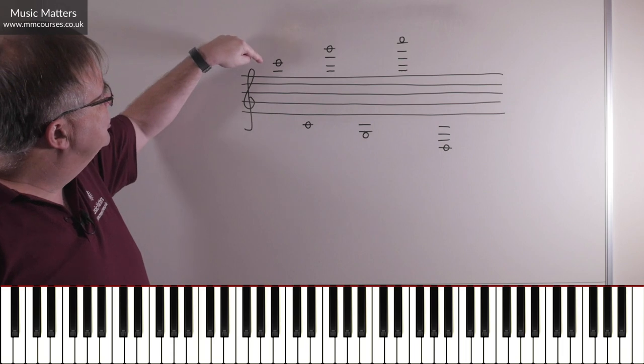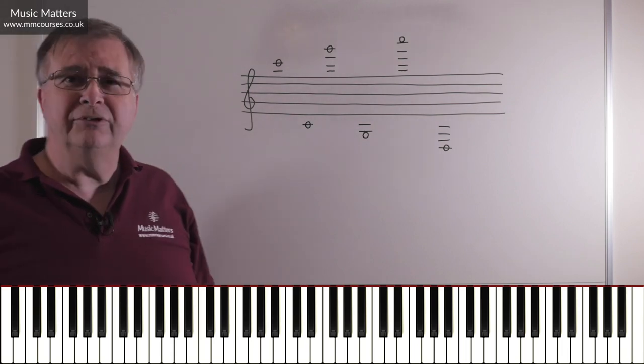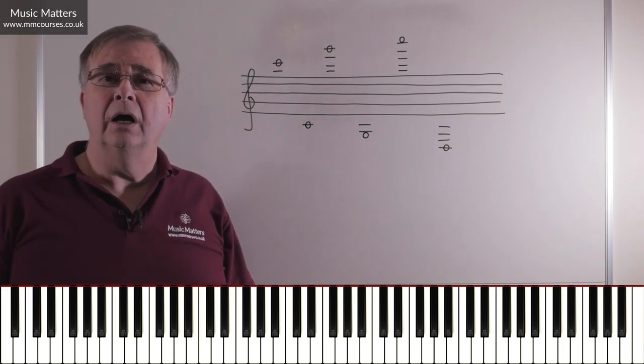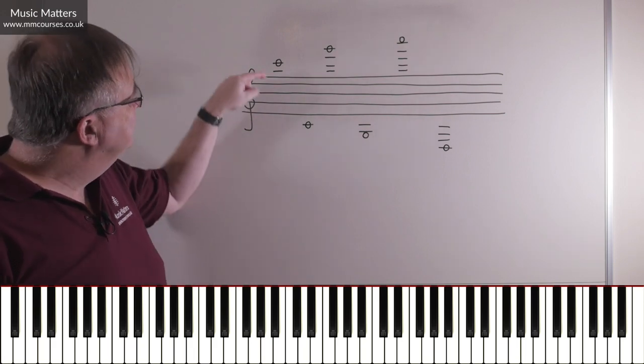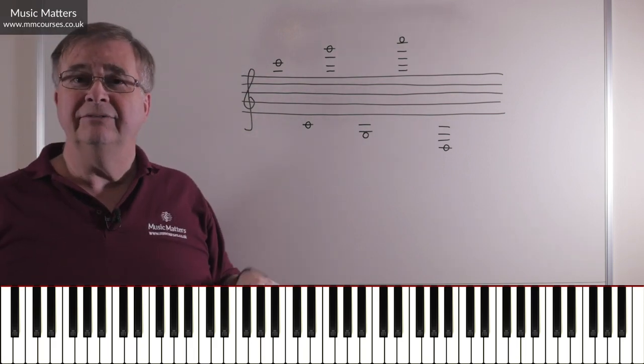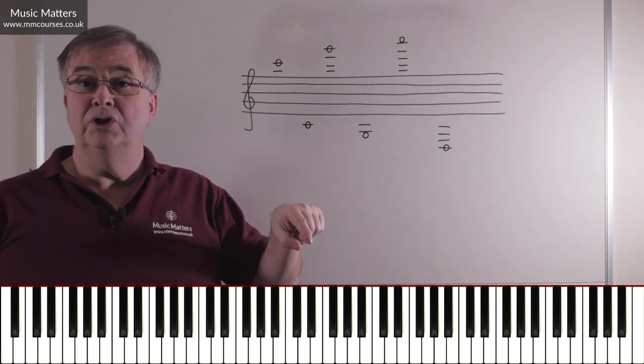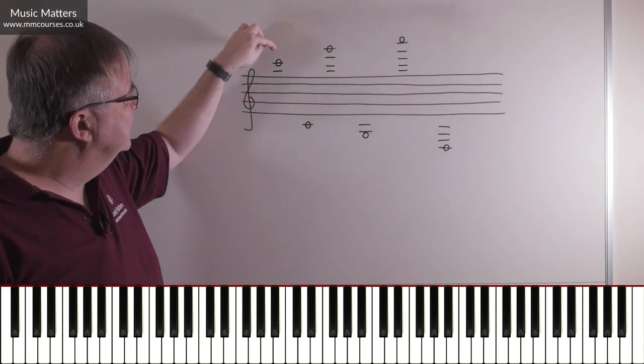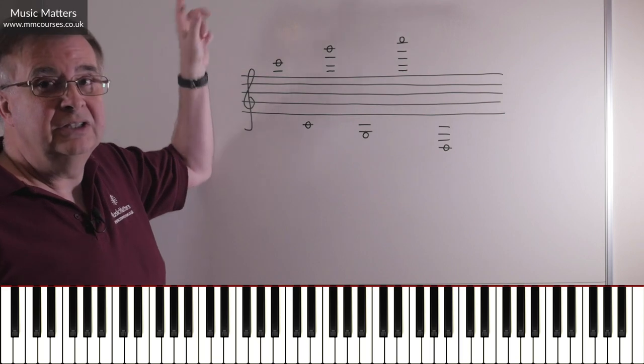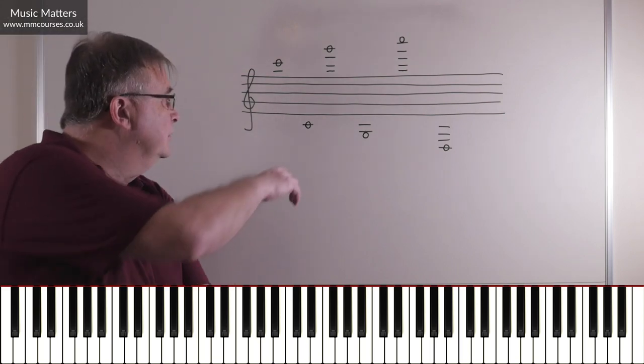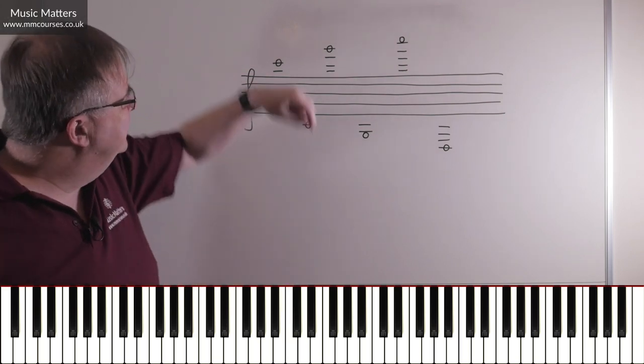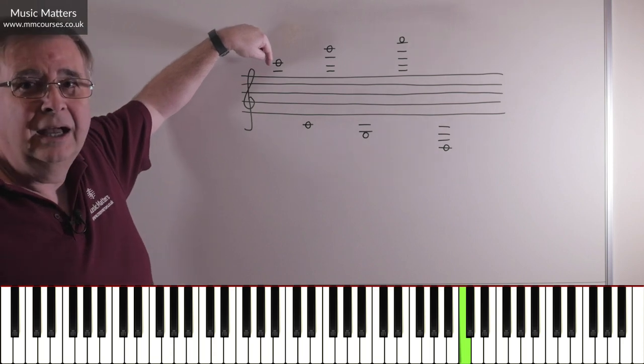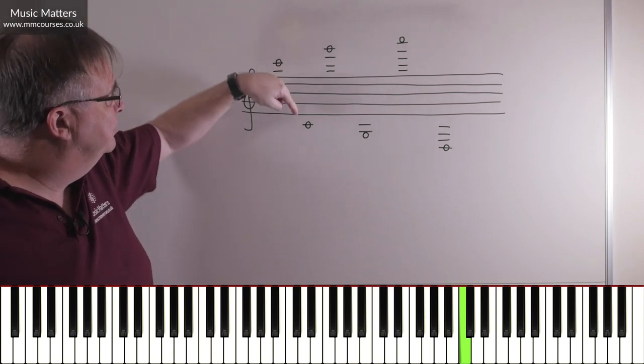Also, if you're on two ledger lines above the treble clef, you are on another C. And two ledger lines above the treble clef is giving you the C that's two octaves above middle C. So two ledger lines C, and also the two telling you it's two octaves. So if this is middle C, then this one is C up here, two octaves above middle C.